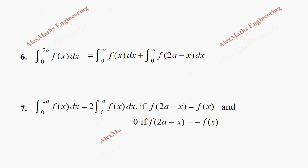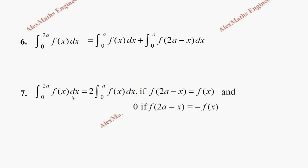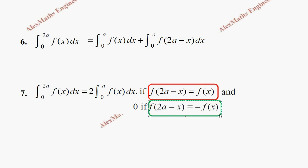Seventh property: for integral 0 to 2a of f(x) dx, based on the previous property — if f(2a − x) equals f(x), then the two parts add together and become twice integral 0 to a of f(x) dx. But if f(2a − x) equals minus f(x), both parts cancel and the result is zero. So the value is either 2 times integral 0 to a of f(x) dx, or zero, depending on whether f(2a − x) equals f(x) or minus f(x).